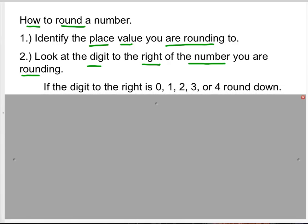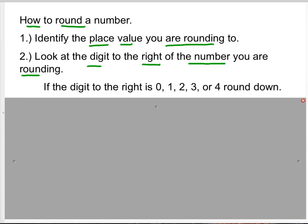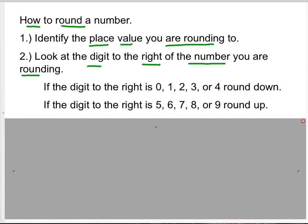The third thing to remember is that if the digit to the right is 0, 1, 2, 3, or 4, you're going to round down. If the digit to the right is 5, 6, 7, 8, or 9, you're going to round up.